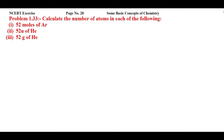Let's solve NCERT Exercise problem 1.33 from page 28 of 'Some Basic Concepts of Chemistry.' Calculate the number of atoms in each of the following — 3 problems are given. For each, we have to find the number of atoms, then the moles, then the atomic mass unit (AMU), and then the grams.